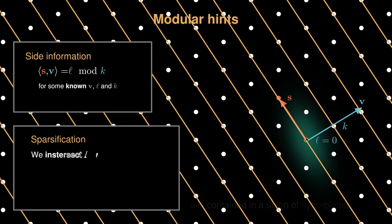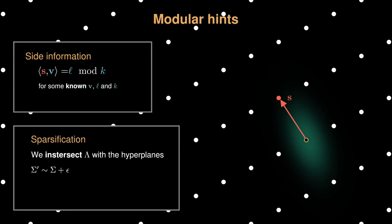And this forms infinitely many hyperplanes that are all orthogonal to v and are equally spaced. We can then sparsify the lattice by intersecting with the union of the hyperplanes. We modify the covariance a little bit and keep the center mu the same. Now, by integrating the modular hint, we derive a new DBDD instance. This new instance is actually an easier problem, as the volume of lattice is increased by a factor of k.